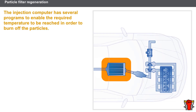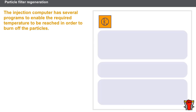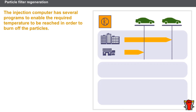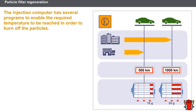When driving at low speed, the temperature of the exhaust gases is insufficient for spontaneous regeneration to take place. The injection computer has several programs to enable the required temperature to be reached in order to burn off the particles. The computer assesses the need for regeneration based on three criteria: the type of driving, the distance covered since the last regeneration, and the estimated mass of particles inside the filter. Should the computer determine that regeneration is necessary, it switches over to a specific injection mode.